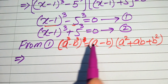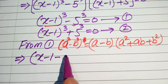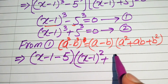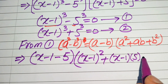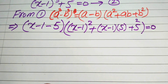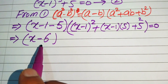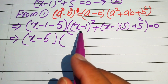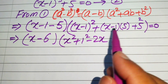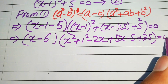Substituting into the formula, we get: (x minus 1 minus 5) times [(x minus 1) squared plus (x minus 1)(5) plus 5 squared] equals 0. Simplifying, x minus 1 minus 5 gives x minus 6, and expanding (x minus 1) squared gives x squared plus 1 minus 2x. Multiplying 5 by the remaining terms gives 5x minus 5 plus 25.